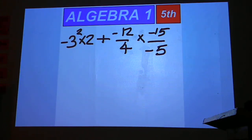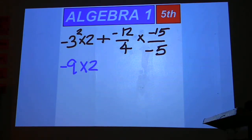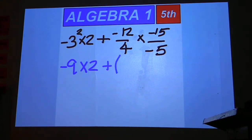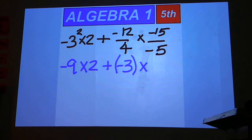We'll start by simplifying what we can. The negative 3 squared is a negative 9, and then the negative 12 over 4 is a negative 3, and negative 15 over negative 5 is positive 3.